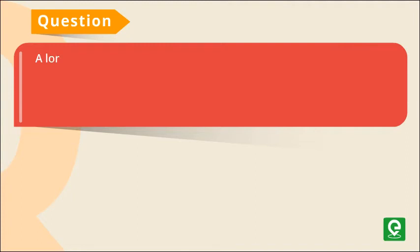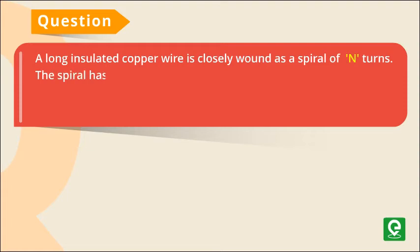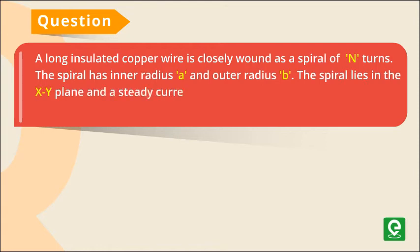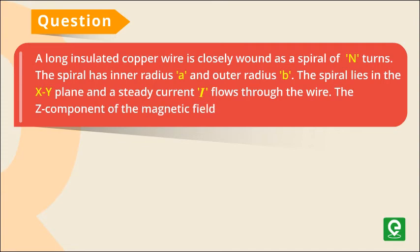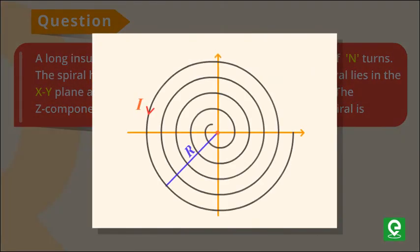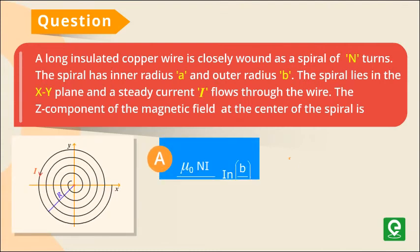Question: A long insulated copper wire is closely wound as a spiral of N turns. The spiral has inner radius a and outer radius b. The spiral lies in the xy plane and a steady current I flows through the wire. Find the z-component of the magnetic field at the center of the spiral.